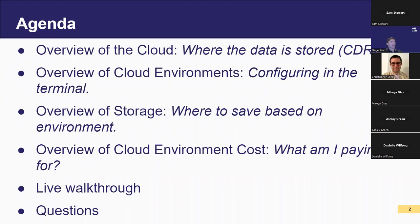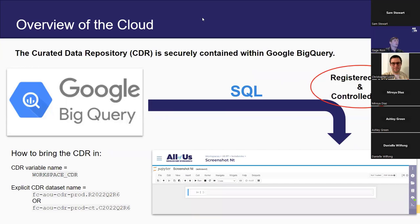So getting into the slides here, today's agenda as you can see broken down here: we're going to do an overview of the cloud — think of it as where's the data stored, being the CDR, the curated data repository. We'll do an overview of cloud environments, so configuring in the terminal and what is the environment. Then we'll do an overview of the storage and different ways to store based off different environments you've created. Then we'll do a brief overview of cloud environment cost and computation, followed by a live walkthrough, and then time for questions.